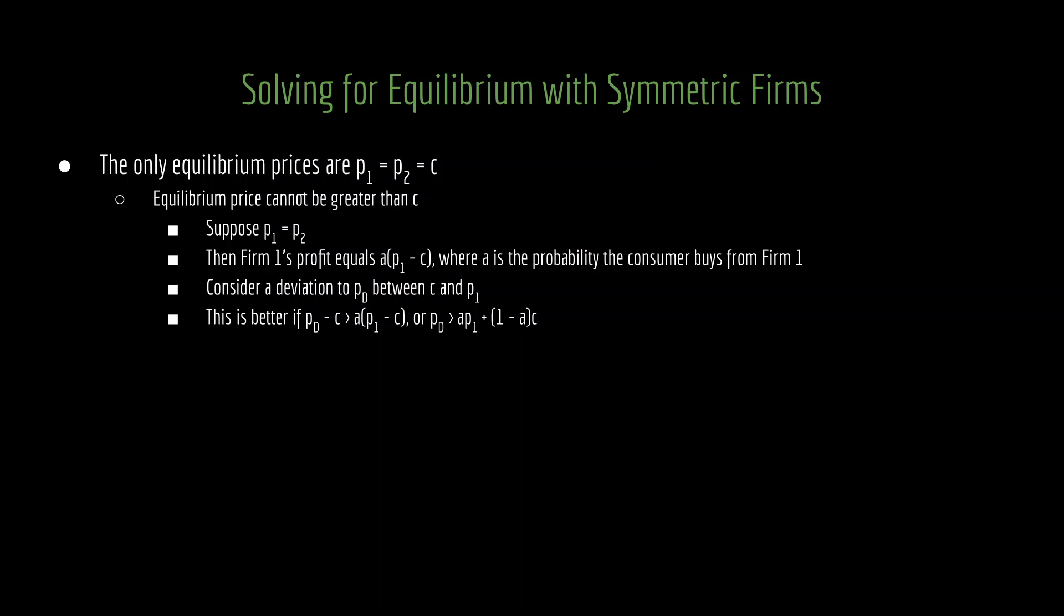Well, consider a deviation to some price PD, that subscript representing deviation, which is some amount between C and P1. This is better for firm one if PD minus C, that's what its payoff is for choosing it. Why is that? Well, it's having the lower price now because PD is a smaller amount, and that means it's always getting the sale and it's always getting a price of PD, and it's paying C, so that's its utility, PD minus C. And that is better for the firm than getting the value of P1 minus C times A, as long as if you rearrange that expression, PD is larger than A times P1 plus 1 minus A times C. You'll notice the right hand of that inequality is a convex combination of P1 and C. And because we have freedom of PD to put it anywhere in between P1 and C, it's always possible to find a value that makes that statement true so that we have a profitable deviation.